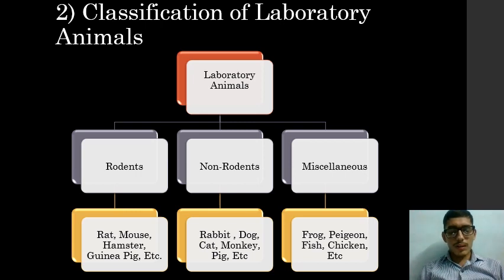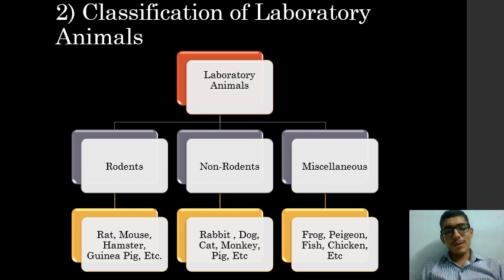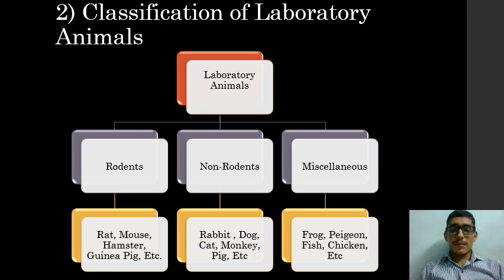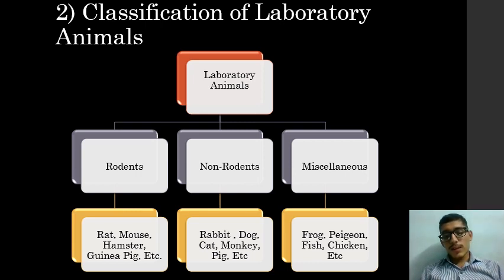Non-rodents are animals which do not have the characteristics of rodents. Some common examples of non-rodents are rabbit, dog, cat, monkey, pig, etc. Miscellaneous animals are different from both rodents and non-rodents — their anatomy is distinct from both groups. Examples of miscellaneous animals are frog, pigeon, fish, chicken, etc.